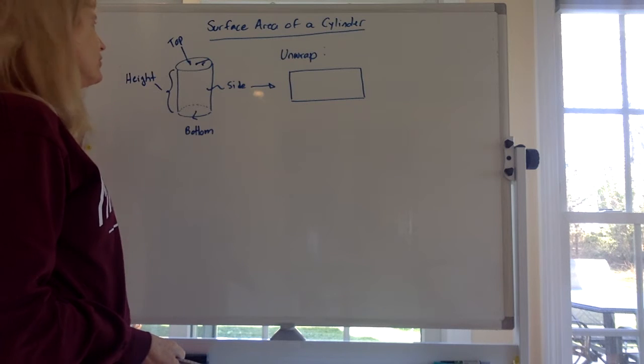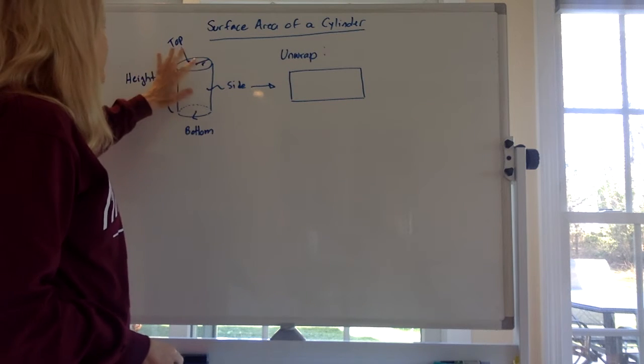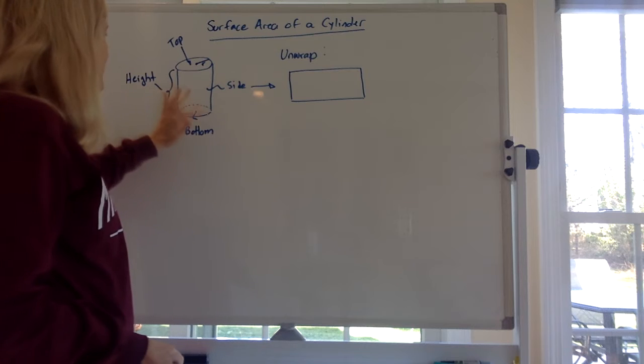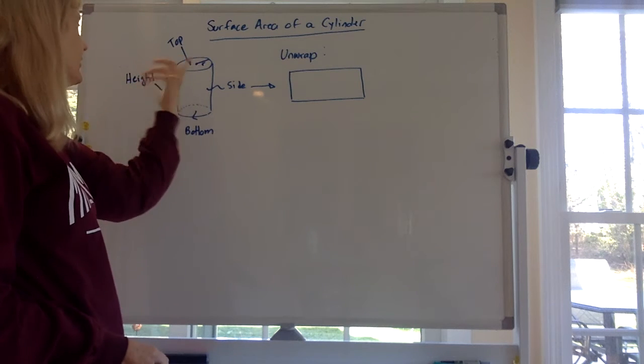So what would you have to do? You'd have to figure out the area of the circle on the top, you'd have to figure out the area of the circle on the bottom, and then the area of the sides of the can.